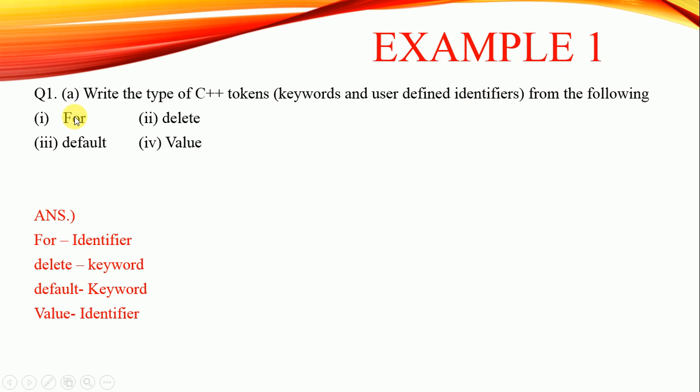The first is 'For', but the thing to notice is that the first letter F is in capital. Usually 'for' is a keyword, but only when you write it in small letters. 'For' with a capital F is no more a keyword, so it will be in the category of identifier.